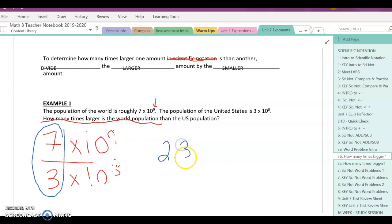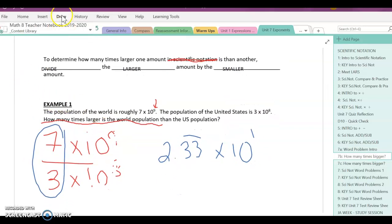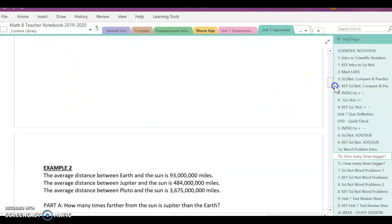So we're going to get 2.33 repeating and we're going to get times 10 to the first. We want to make sure we understand what that means. 10 to the first means just multiply that by 10. So if we were to rewrite that, it's like 23.3 repeating. So it's about 23 times, right? The world population is 23 times bigger than the United States. So if we took the population of the United States and multiplied by 23, we would roughly get the world population. That's what it's asking. We normally would not leave these in scientific notation.